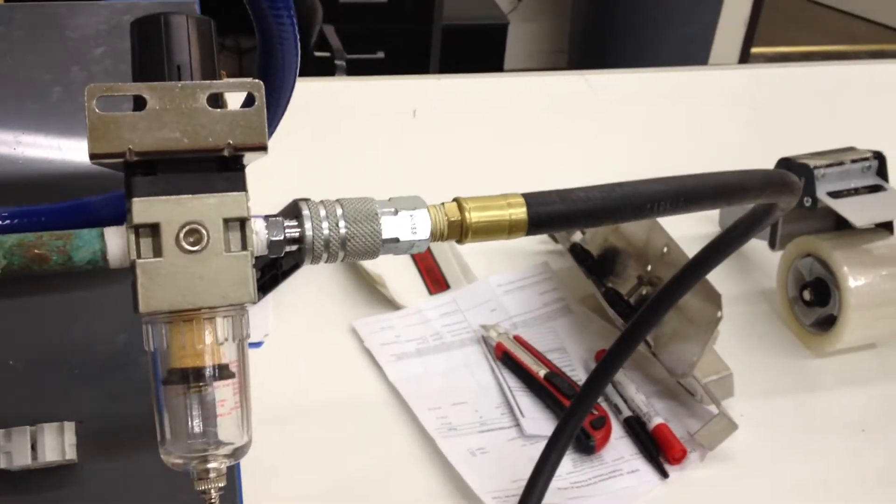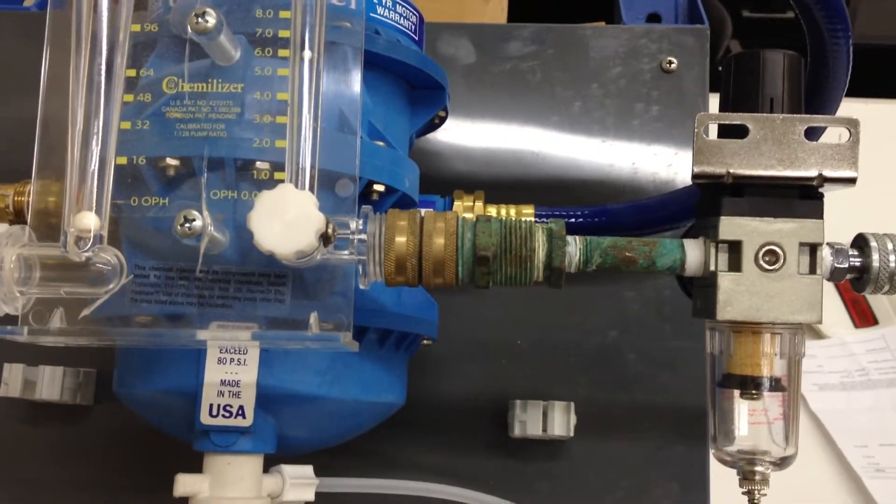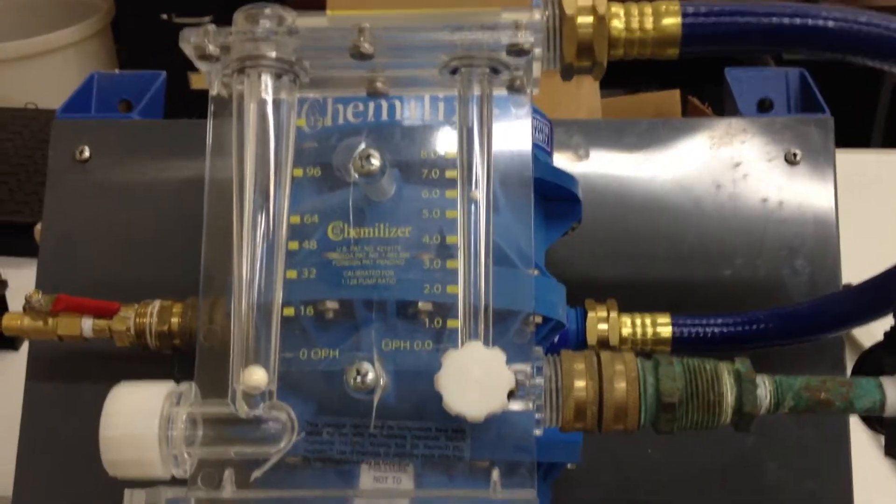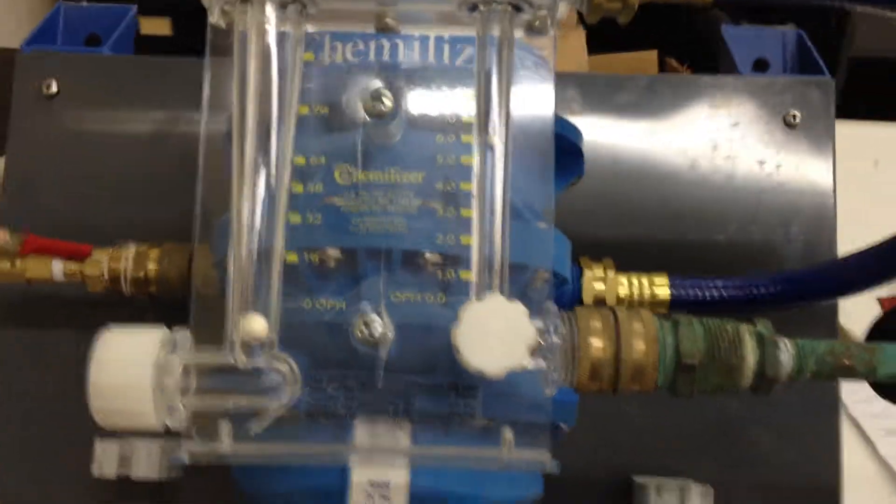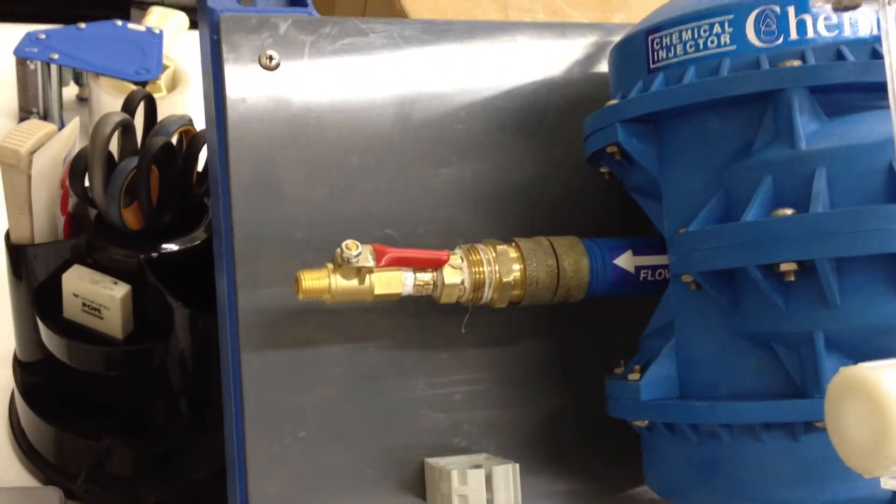You can see right here, I've got an airline hooked up to a pressure regulator. It's going into the inlet of the CP33. It has its little flow meter control panel here. It goes into the motor, and then it comes out this side right here.